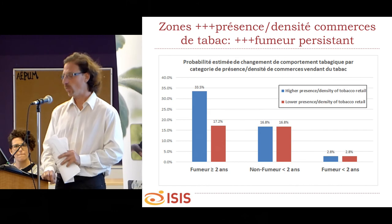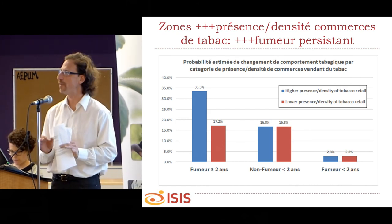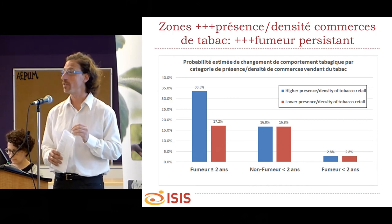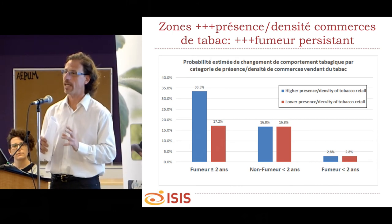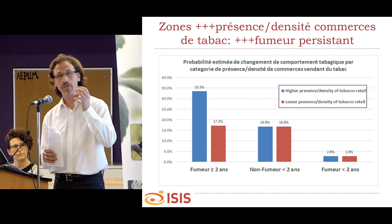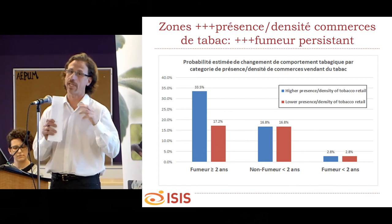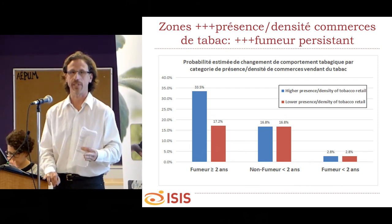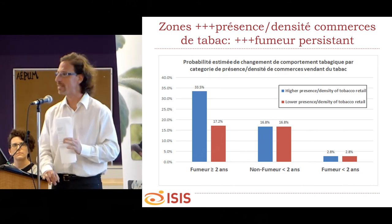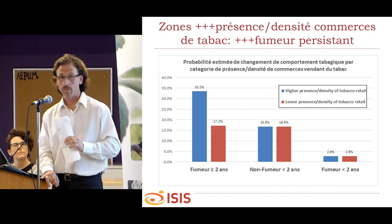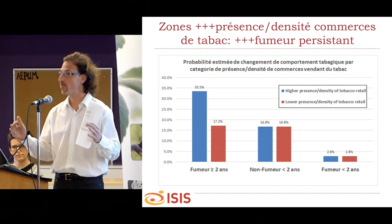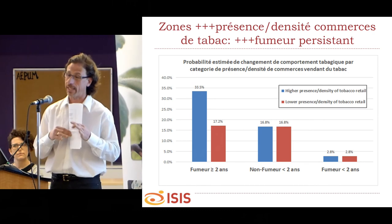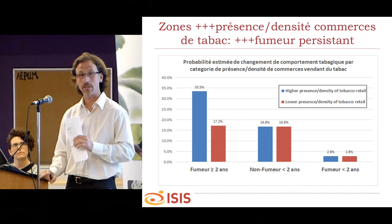On this graph, you see different patterns of smoking behavior. The first on the left-hand side is the probability of being a smoker for two years or longer for an individual living in a residential area with a higher presence or density of tobacco retail stores versus those living in other areas. We were able to see that a high presence or density of tobacco retail stores was significantly associated with the probability of being a smoker for two years or longer — in other words, maintenance of smoking. That probability is 33.5% versus 17.2% for those living in areas with lower density or presence of tobacco retail stores.